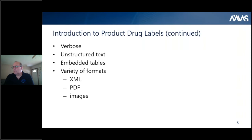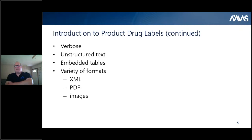Here's a little bit about labels. We were going to put an example label here, but many of them are quite verbose — they go on for pages and pages. They contain lots of unstructured text, embedded tables, and sometimes embedded figures. You can already see the problem of making these machine readable. The information is in there somewhere, but it's very difficult to tease out. There's a variety of formats: the preferred format is XML, but depending on when the product was approved, they may also come in image format or PDF.